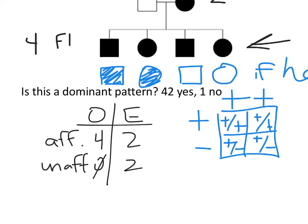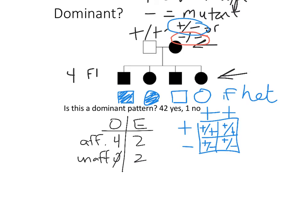This is actually statistically significantly different. Observing four kids that are all affected rules out, statistically speaking, the probability that mom is heterozygous. There's a less than 5% chance that if mom were heterozygous, every one of her eggs used in fertilization would carry the minus allele. Three in a row is not statistically significant, but four out of four gives p less than 0.05. So we can statistically predict mom's genotype just from the pedigree data.